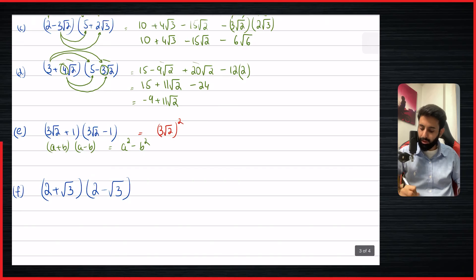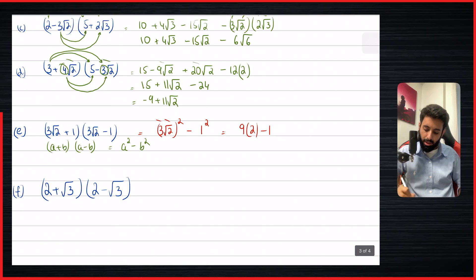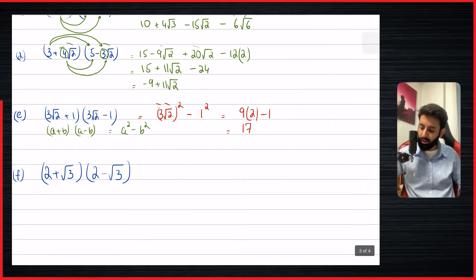So it's going to be (3√2)² minus 1². This becomes 9 × 2 — because 3² = 9 and (√2)² = 2 — minus 1. That gives 18 - 1 = 17.